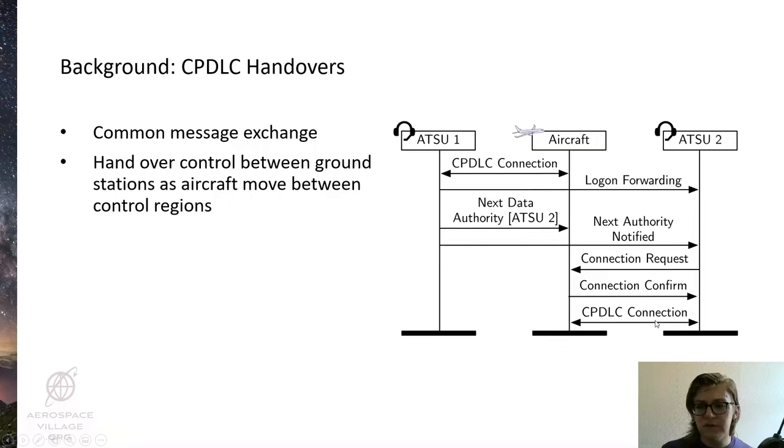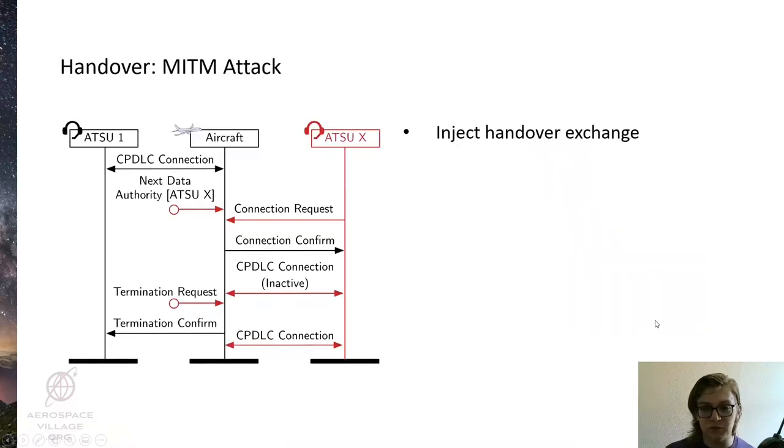We can use this handover to construct an attack in which we simply inject the messages relevant to the handover, telling an aircraft to connect over to this ATSU-X, which is a legitimate identifier for a ground station, but one which is out of range, so we can pose as that ground station without causing any issues. This exactly follows the CPDLC handover process, so everything appears to be legitimate from the perspective of the aircraft, and it will hand over to ATSU-X without any issue.